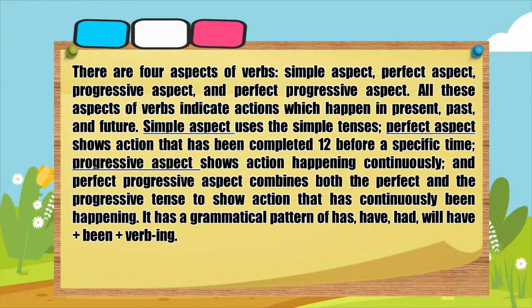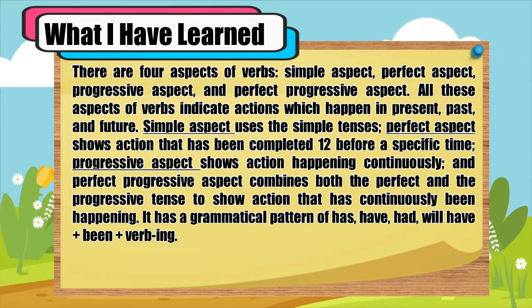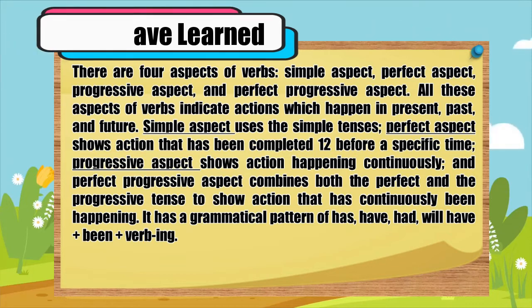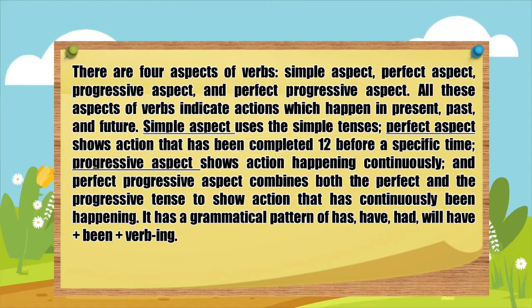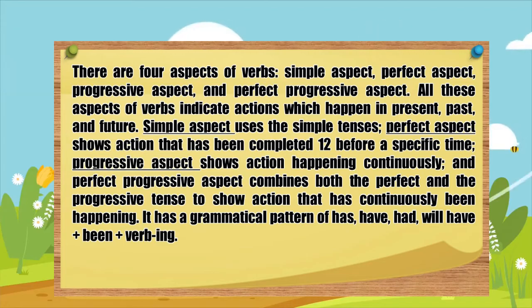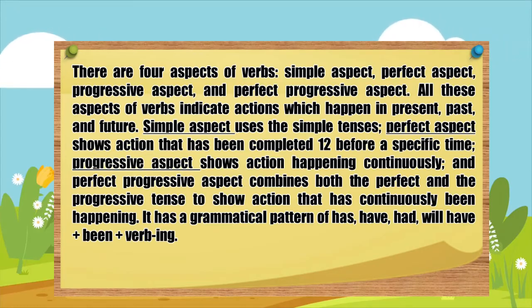There are four aspects of verbs: simple aspect, perfect aspect, progressive aspect, and perfect progressive aspect. All these aspects of verbs indicate actions which happen in present, past, and future. Simple aspect uses the simple tenses. Perfect aspect shows action that has been completed before a specific time. Progressive aspect shows action happening continuously. And perfect progressive aspect combines both the perfect and progressive tenses to show action that has continuously been happening. It has a grammatical pattern of has/have/had/will have + been + verb-ing. You have learned the aspects of verbs and their forms and uses.